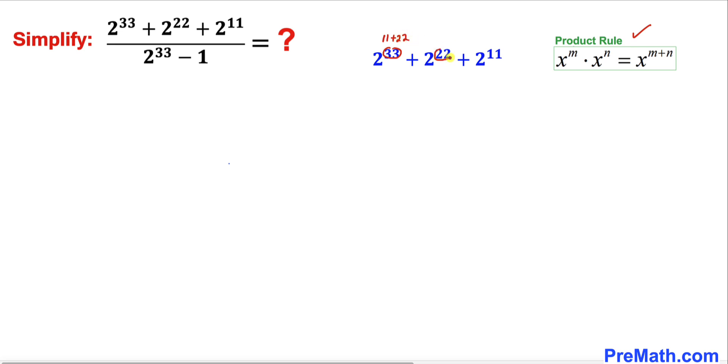This 22 exponent could be written as 11 plus 11. Therefore we can write out this first term 2 power 33 as 2 power 11 times 2 power 22. And likewise 2 power 22 could be written as 2 power 11 times 2 power 11. And this one we just left as it is.